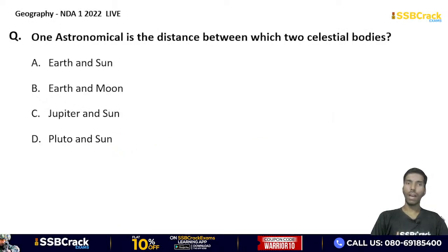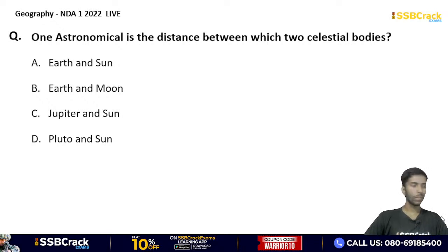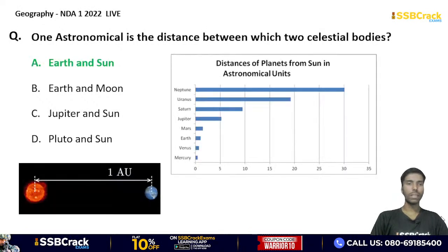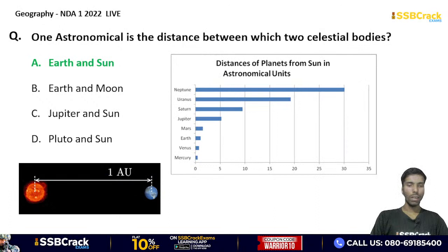One astronomical unit is the distance between which two celestial bodies? Earth and Sun, Earth and Moon, Jupiter and Sun, or Pluto and Sun? The correct answer is Earth and Sun. That concludes the Geography portion of today's class — next will be the English class followed by Mathematics.